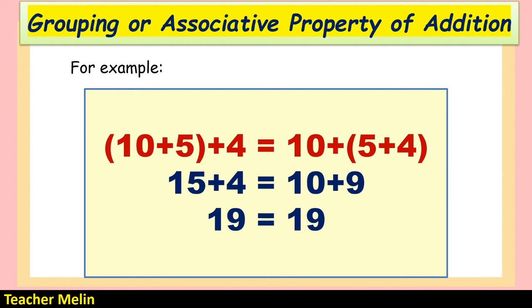Another example: 10 plus 5 plus 4. Grouping 10 and 5: 10 plus 5 equals 15, then 15 plus 4 equals 19. Or grouping 5 and 4: 5 plus 4 equals 9, then 10 plus 9 equals 19. This is an example of the grouping or associative property of addition.